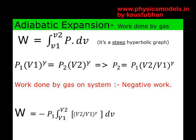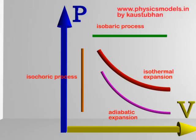Looking closely at the graph, during expansion the isothermal curve sits at a higher level and the adiabatic curve is lower, assuming both start at the same point. This means the work done in an adiabatic expansion is less than the work done in an isothermal expansion. We have now covered two of the critical curves — the isothermal and the adiabatic.